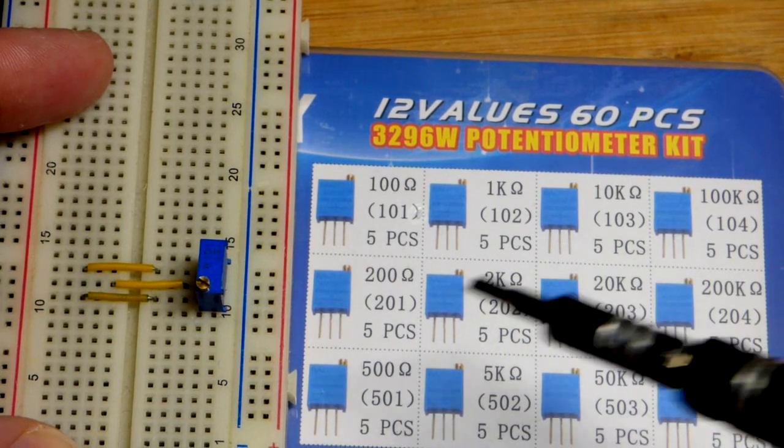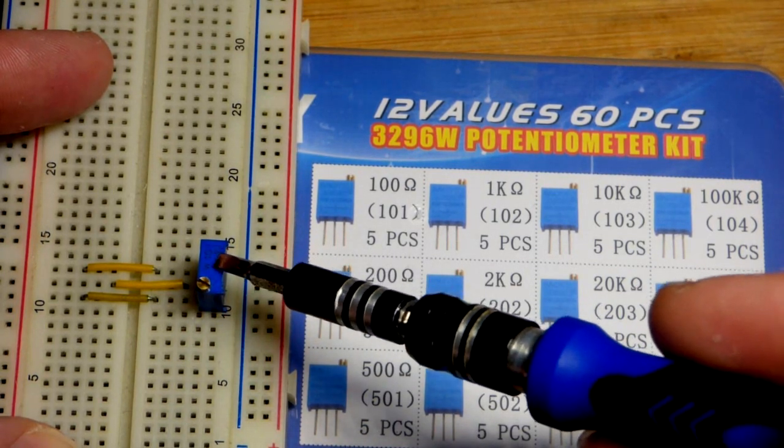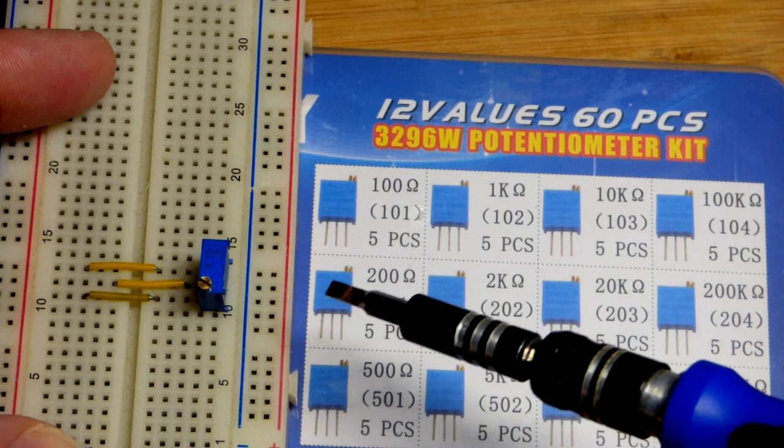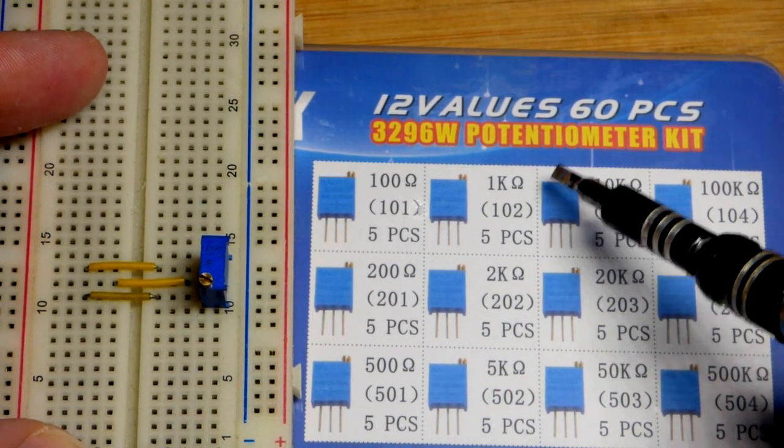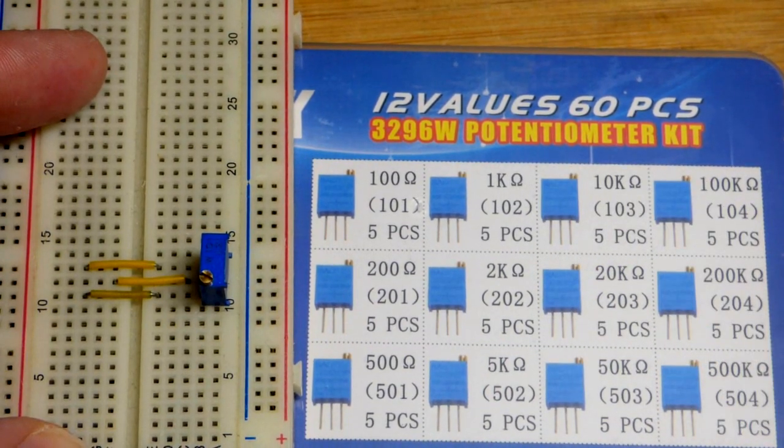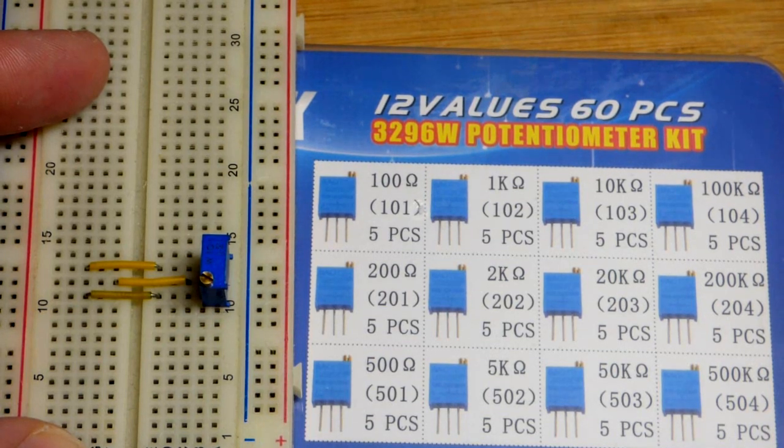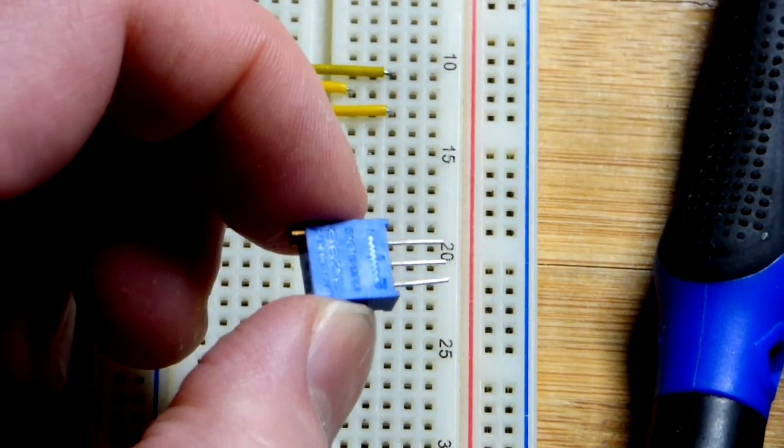So it's a trimmer potentiometer, trim pot for short. You can see potentiometer on their kit. So it has the values of a potentiometer but it's smaller, that's why it's a trimmer.